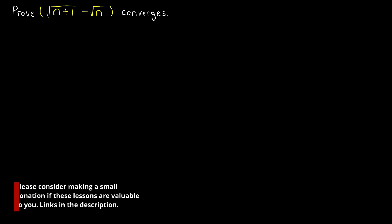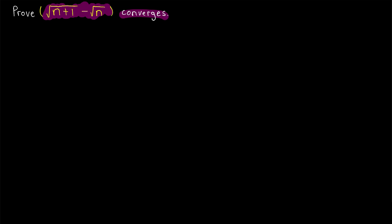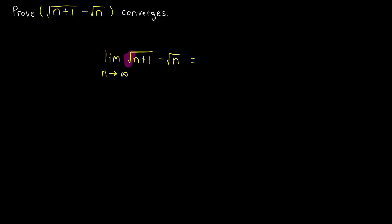We're going to prove that the sequence whose nth term is √(n+1) − √n converges. Written another way, we're proving that the limit as n approaches infinity of √(n+1) − √n is equal to some real number. As n gets really big, the difference between √(n+1) and √n is going to become pretty negligible, and so we'll be proving that this limit is equal to 0.